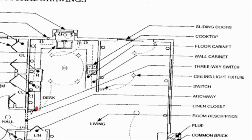Three-way switch — S with the number three next to it is a three-way switch. That would be found typically in hallways or a stairway where you have two or more switches that are going to control one or more lights.